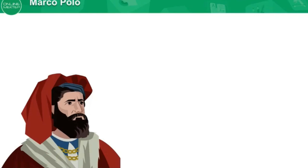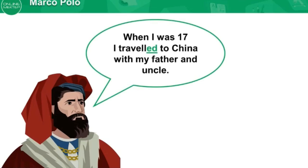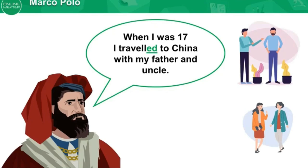Now I'm going to tell my story — listen carefully and answer my questions. When I was 17, I traveled to China with my father and uncle. Which picture is correct? Great — in the first picture you can see two men: my father and uncle.